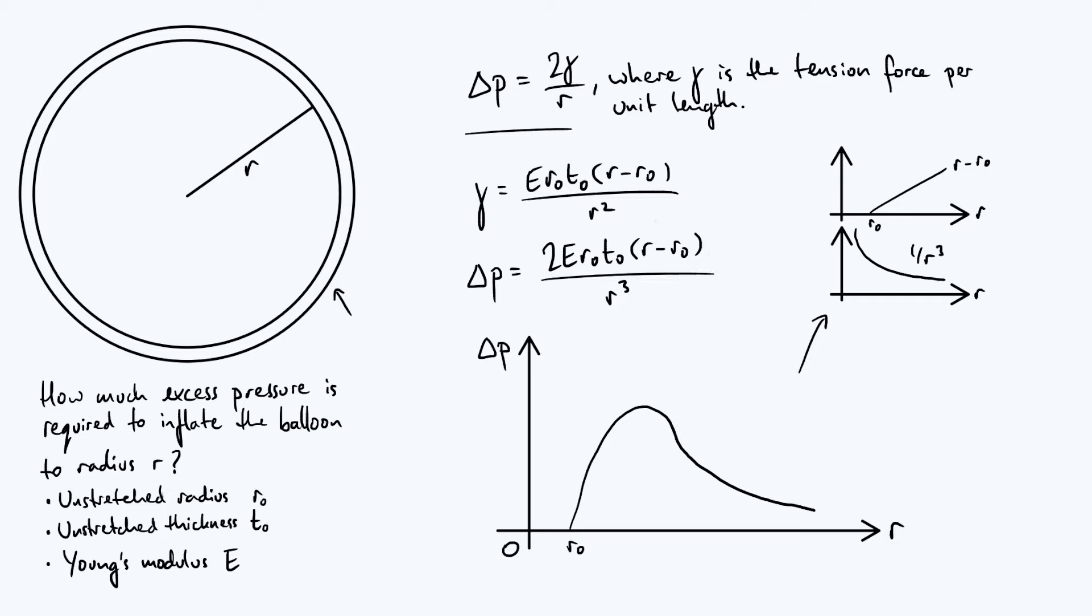So it's already fairly intuitive to understand why the pressure gets bigger with radius at first. But then what about this r³ on the denominator? Where did that come from? Well, it's come from two places. It's come firstly from the fact that there is already an r on the denominator of that original Δp expression that we had, but that's been combined with an r² from our γ expression that we derived.